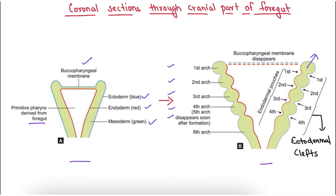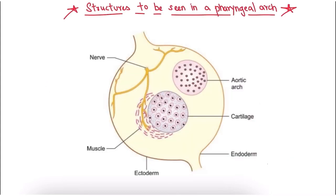The mesodermal thickening leads to formation of arches: first, second, third, fourth arch — the fifth arch disappears as soon as it is formed — and sixth. So there are total five arches: first, second, third, fourth, and sixth. The endoderm would form endodermal pouches (first, second, third, and fourth) and ectoderm would form ectodermal clefts (first, second, third, and fourth).